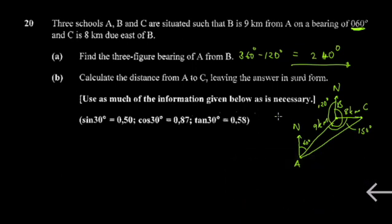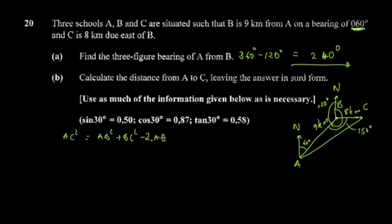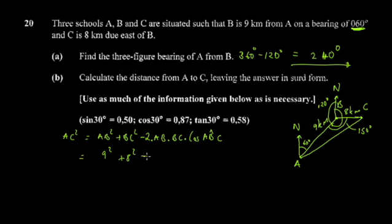This is a tricky part, so listen carefully. We use the cosine rule: AC² = AB² + BC² − 2·AB·BC·cos(ABC). The sandwiched angle is ABC = 150 degrees. Substituting: AB² is 9² and BC² is 8², then minus 2 times 9 times 8 times cos(150°).